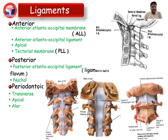The ligaments: anteriorly, these include the anterior longitudinal membrane or anterior atlanto-occipital membrane, anterior atlanto-occipital ligament, apical ligament, and tectorial membrane. Posteriorly, the posterior atlanto-occipital ligament and nuchal thickening. The periodontic tissues include transverse, apical, and alar ligaments.